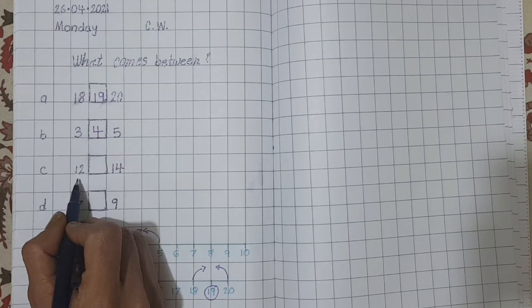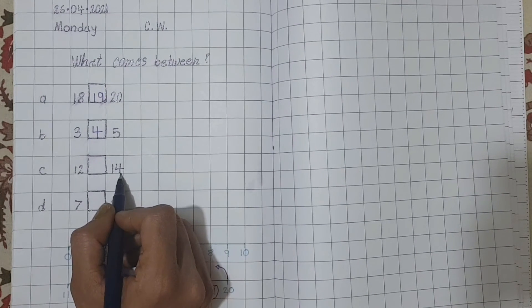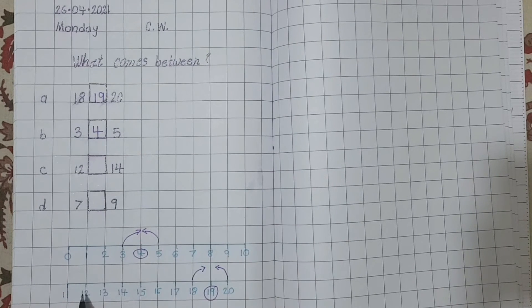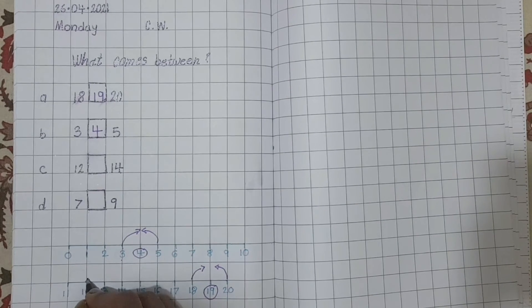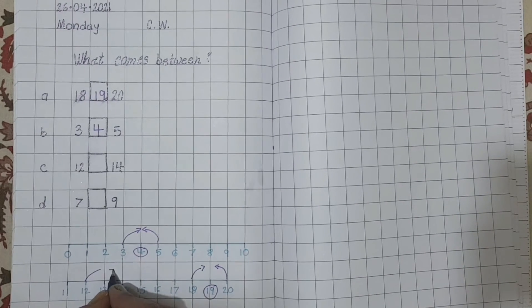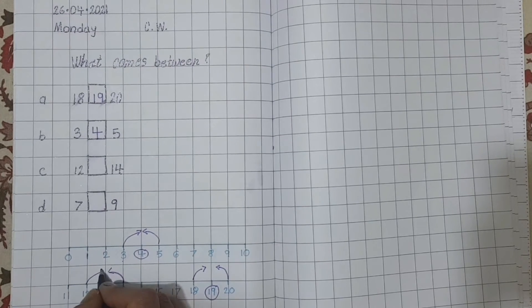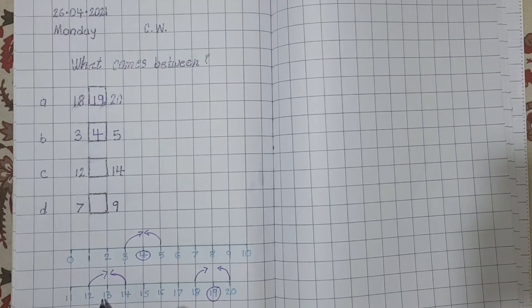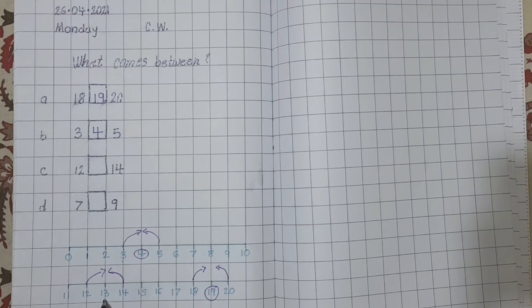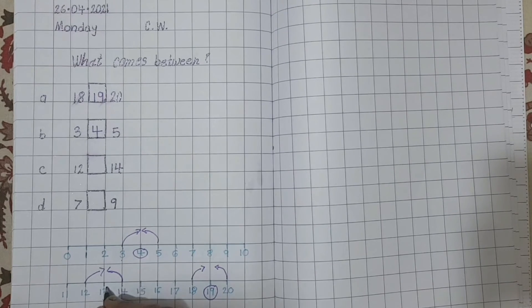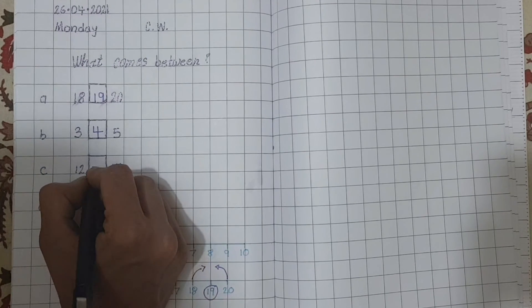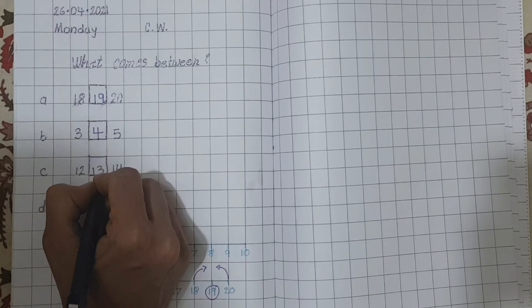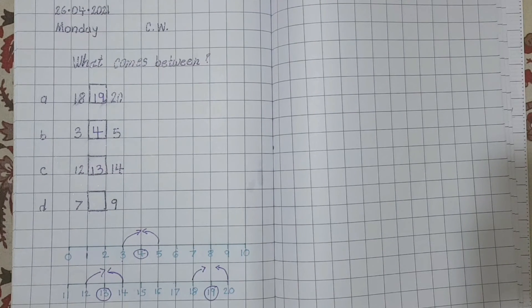Next number. Can you tell me which number is this? Right. 12. And this one? 14. So, where is number 12? Here. And number 14. So, what comes between 12 and 14? Which number is this? Right. Number 13. So, let's write here. Number 13. Very easy.